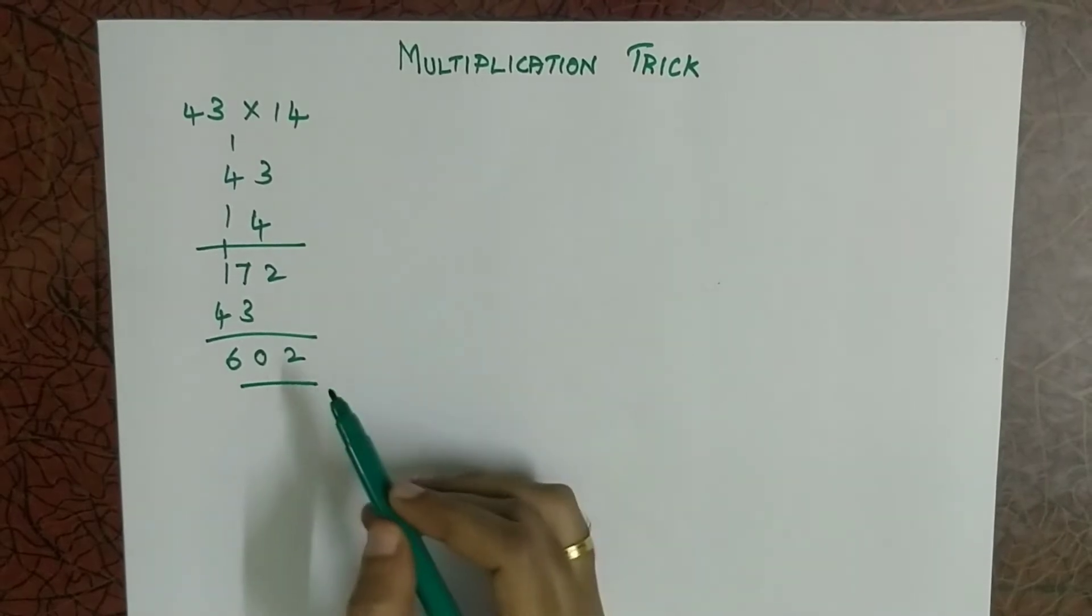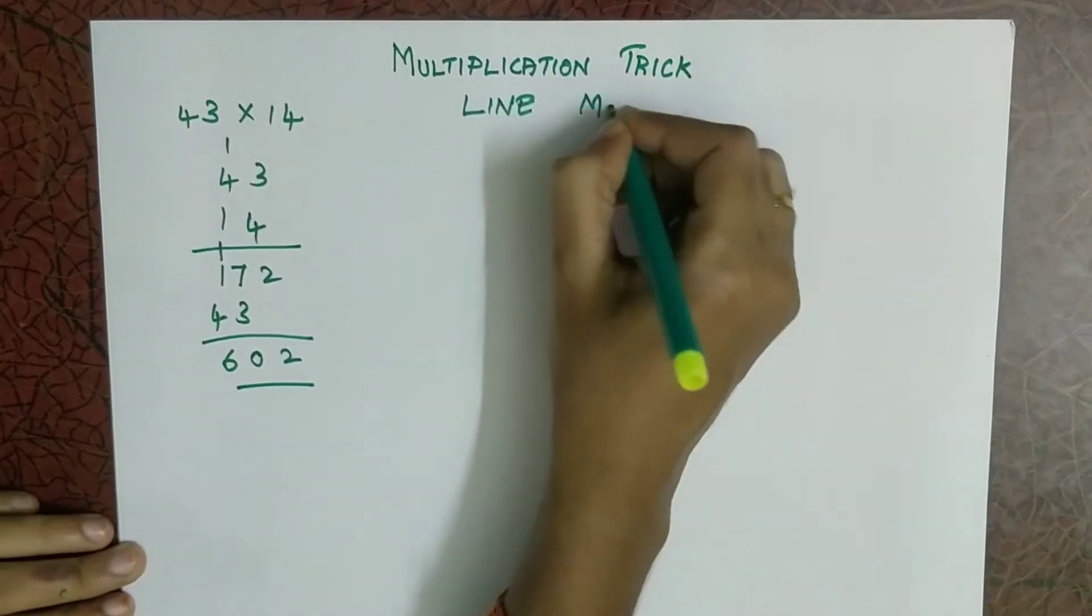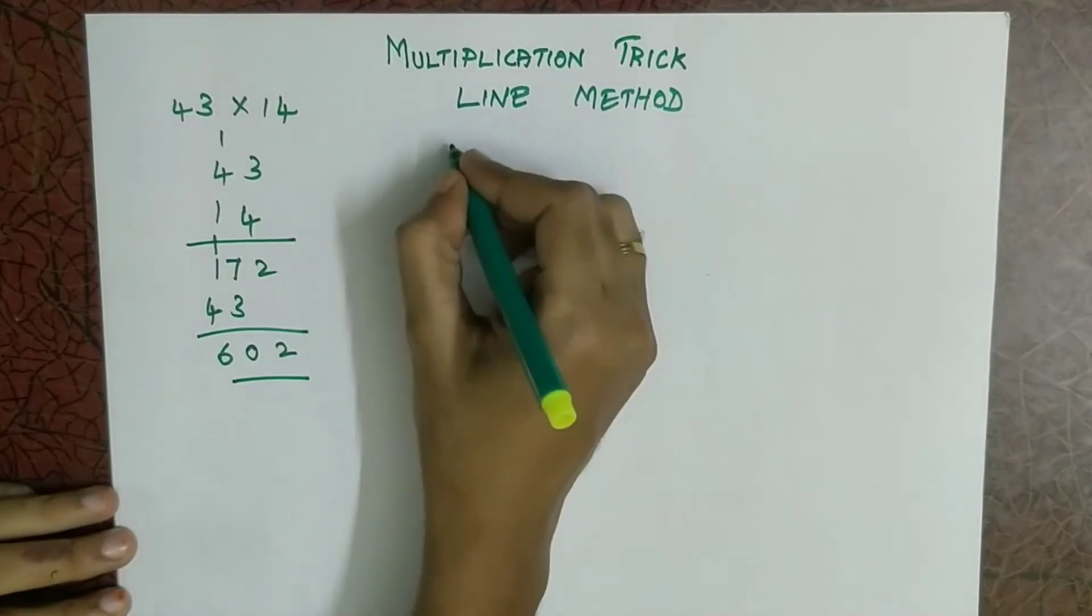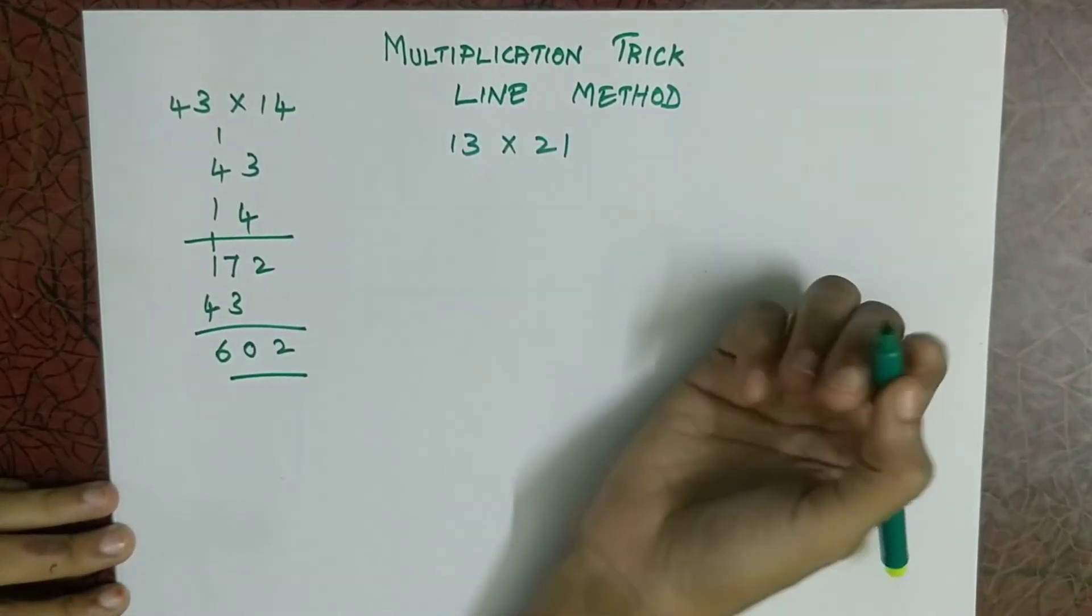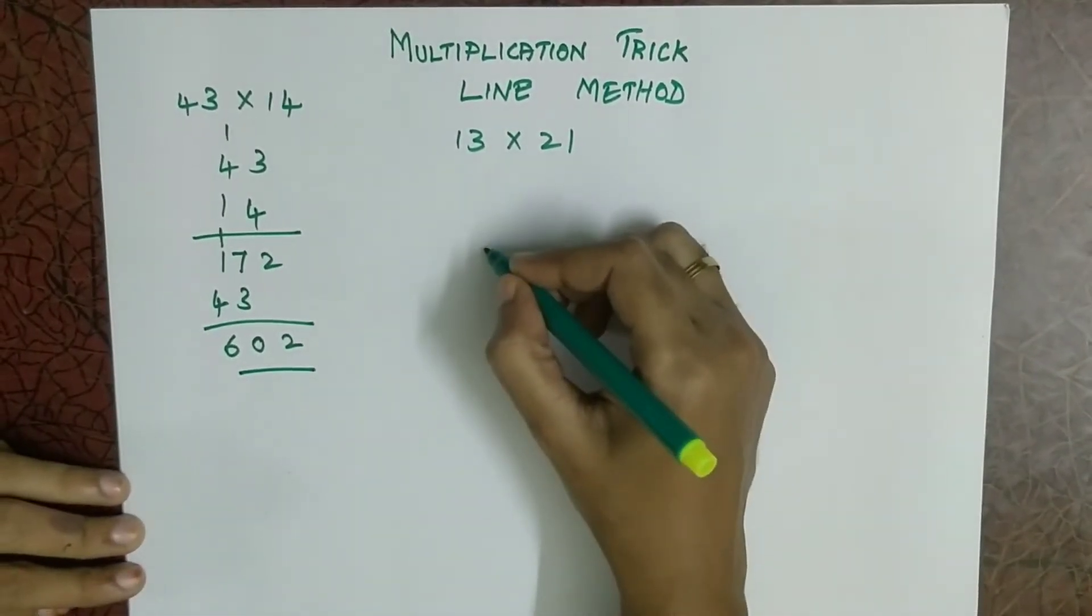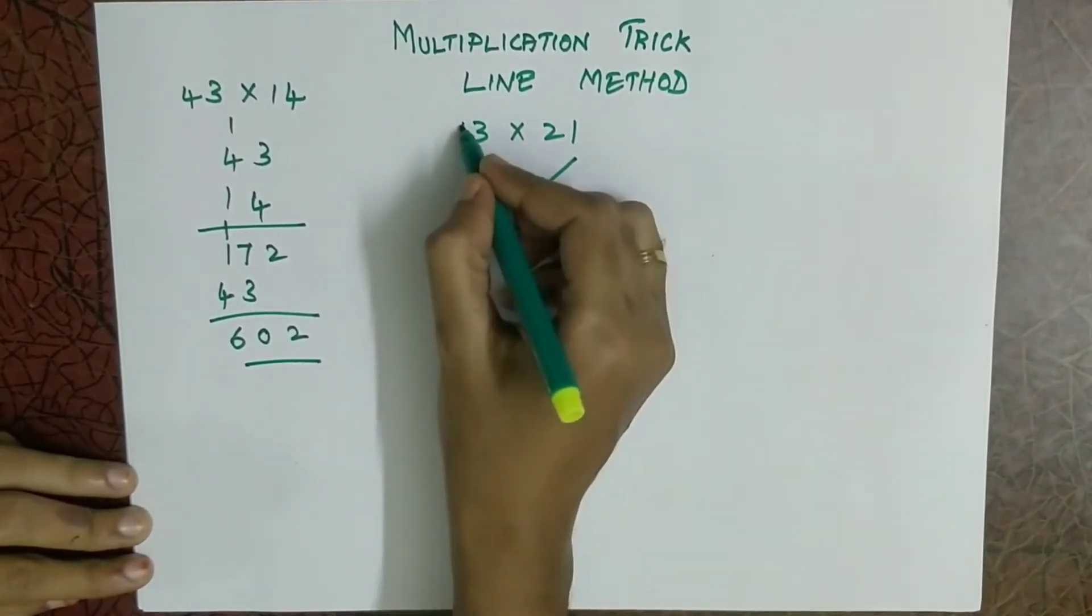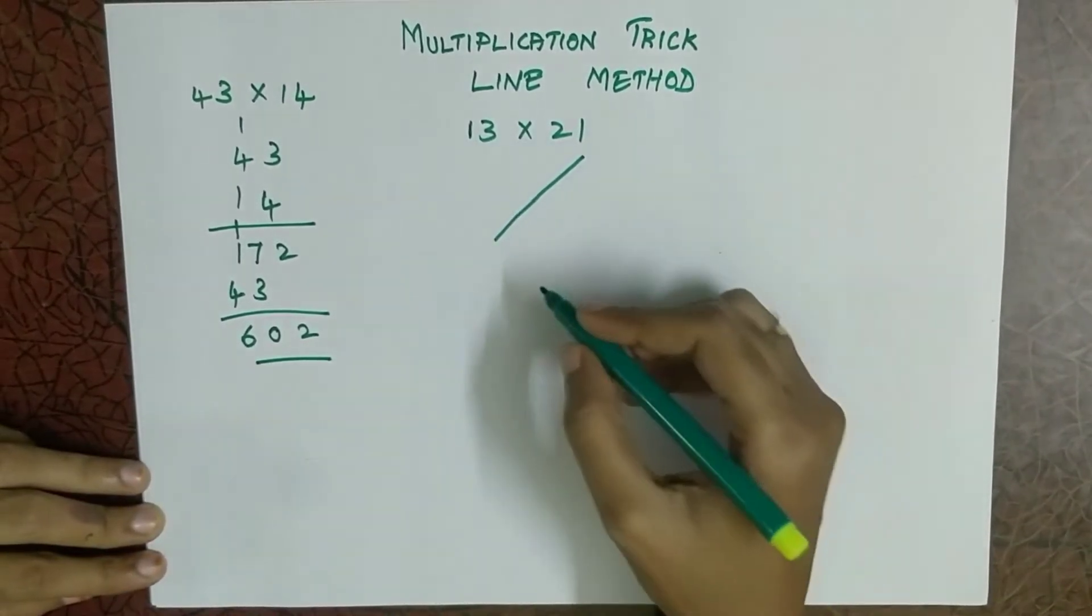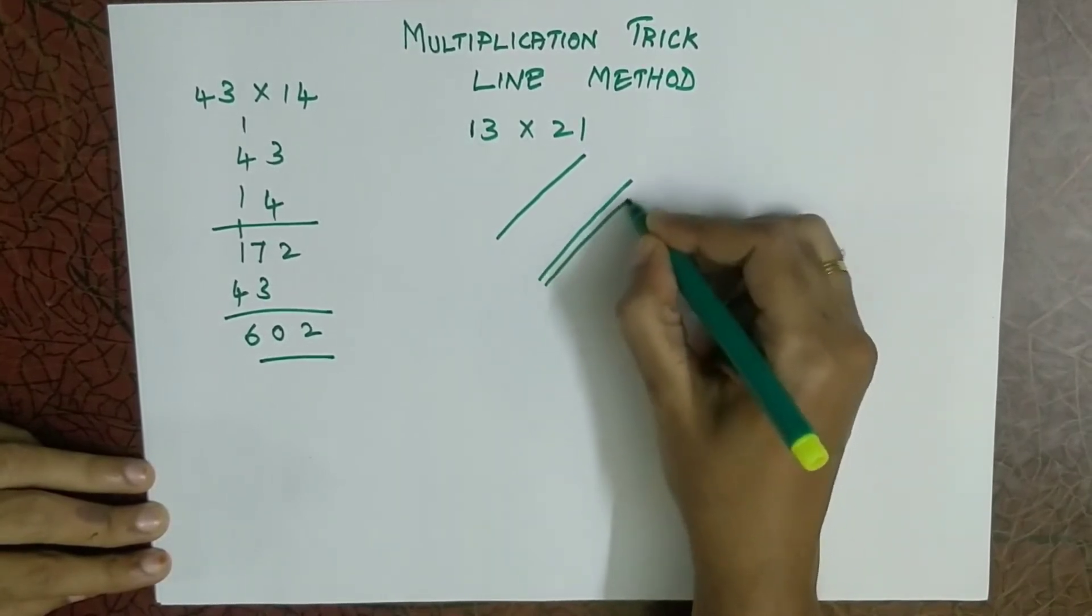Instead of this we have a simple trick called line method. So what is line method? Let's see now. I will show with one example, 13 into 21. The line method is first you have to draw one line diagonally. Like here the number is 1 so I have drawn one line here, and then next number is 3, so you have to leave some space and you have to draw three lines here.